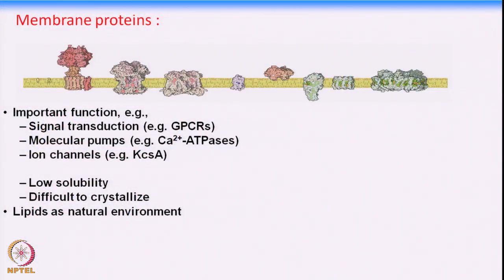Membrane proteins are one third of the total proteins and have very important functions. They are involved in signal transduction - like GPCRs, G protein coupled receptors, which are one of the primary targets for drugs. Many drugs are designed just for GPCR targeting. Then there are molecular pumps like calcium pump, potassium pump, and ion channels - all membrane proteins that are also very important for the pharma industry.